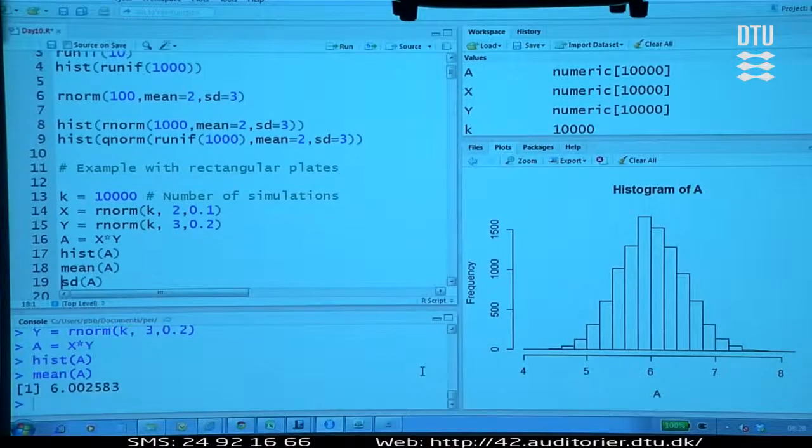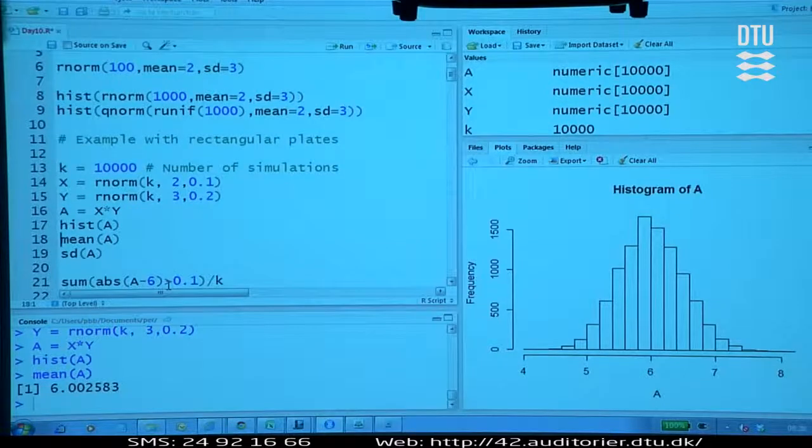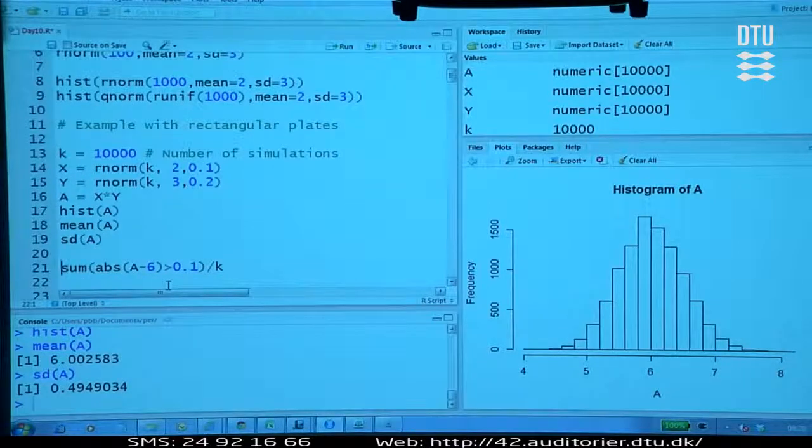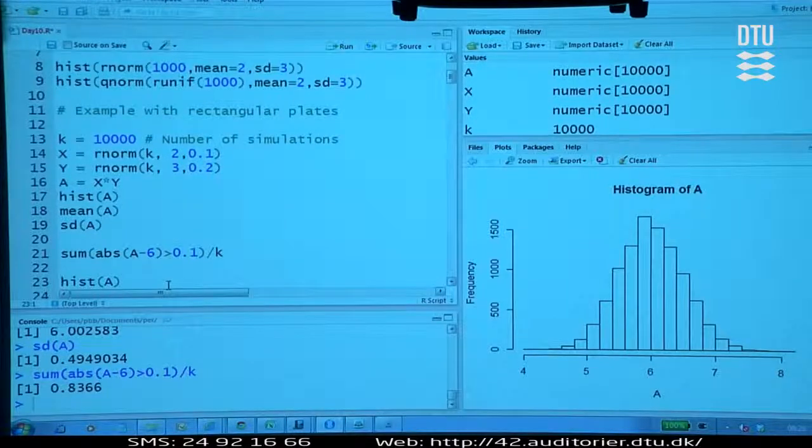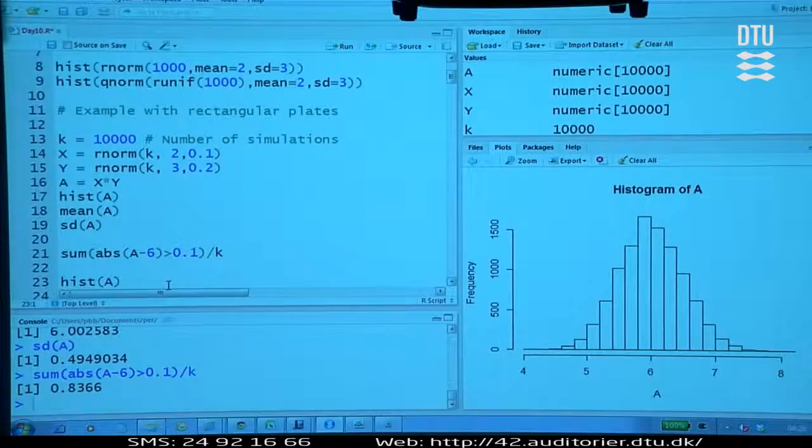What is the mean of A? Seems to be 6, around 6. What is the standard deviation of A? It's around 0.5. What is this odd probability of being more than 0.1 square meter away? That's a pretty large probability. That happens in 84% of the time.